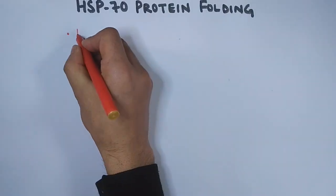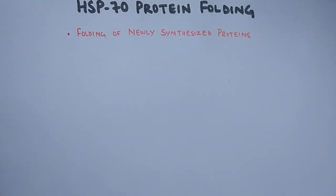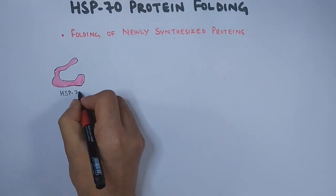The HSP-70 chaperone mediates the folding of newly synthesized proteins. If we transform the protein structure of HSP-70 into its diagrammatic form, we can make it like this, having a cavity with a top open lid.